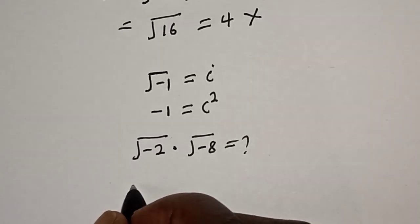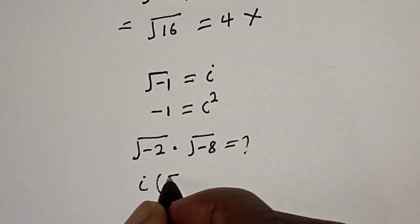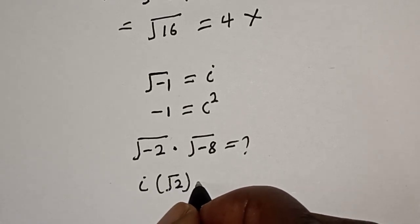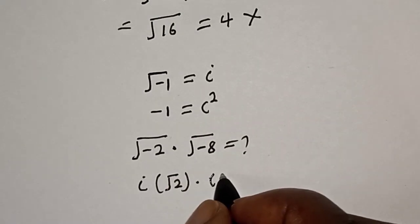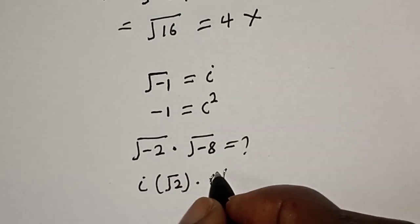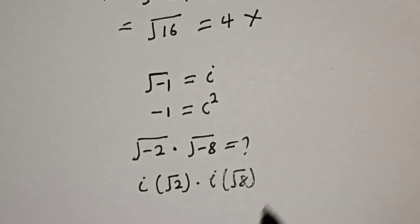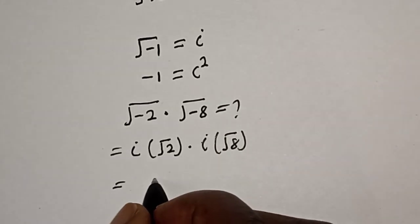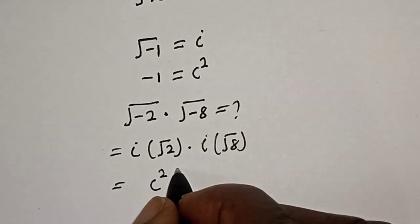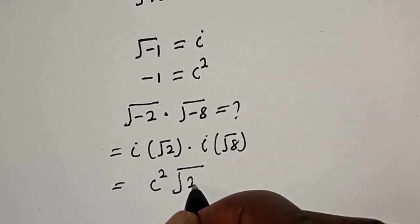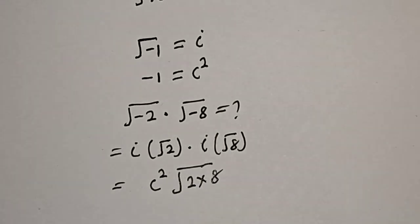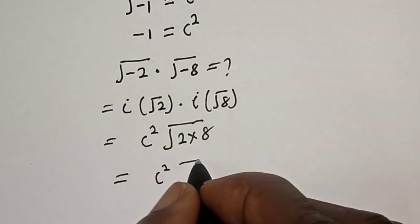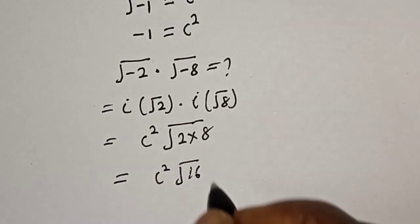Square root of minus 2 is equal to i multiplied by square root of 2. Multiplied by square root of minus 8, which is equal to i times square root of 8. This gives us i times i, which is i squared, then square root of 2 times 8, that is square root of 16.